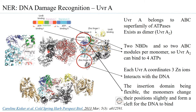UVR-A2 differs in its binding affinity to a DNA lesion by only two to five times — not much. It can bind to undamaged DNA with good affinity, but when binding to a damaged DNA region, the affinity increases by just two to five folds. Nevertheless, it is attributed that UVR-A is responsible for sensing the DNA damage.